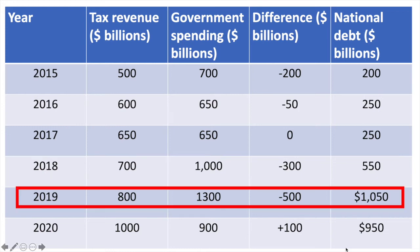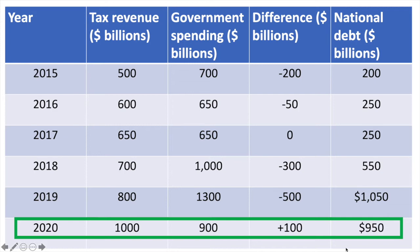In 2019 expenditure exceeded tax revenues by $500 billion, increasing the national debt to $1 trillion $50 billion. In 2020 the government collected more in tax than it spent, resulting in a surplus of $100 billion. Using this surplus to pay down the debt reduces the national debt to $950 billion.